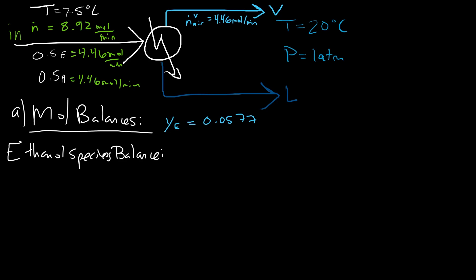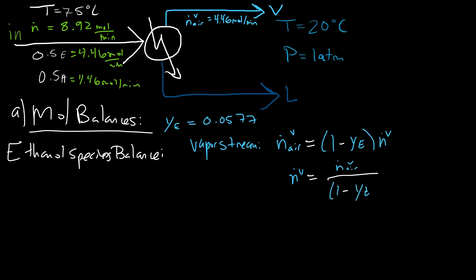Now we have enough information to do a vapor stream mole balance. The molar flow rate of air in the vapor equals one minus the mole fraction of ethanol (which is the mole fraction of air in the binary system) times the total vapor molar flow rate. Rearranging, the total vapor molar flow rate equals the air vapor flow rate divided by (1 − 0.0577), giving 4.73 moles per minute. The molar flow rate of ethanol vapor is therefore 0.27 moles per minute.